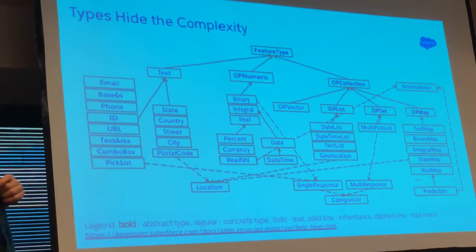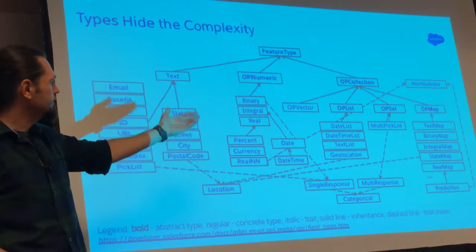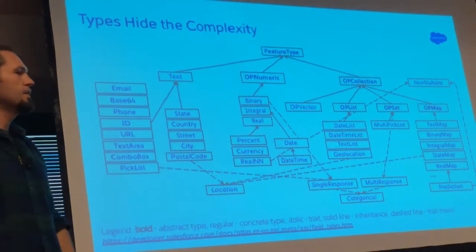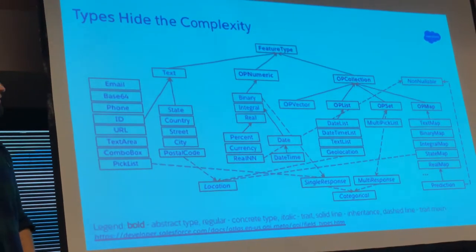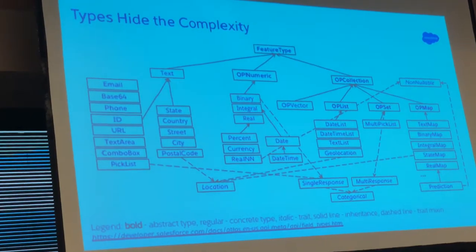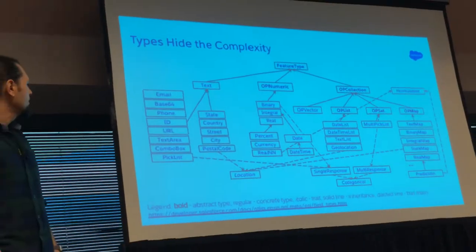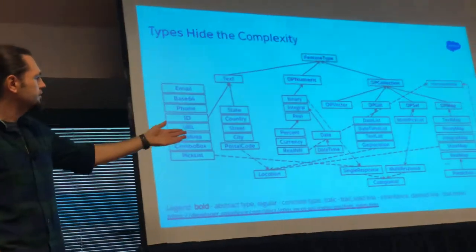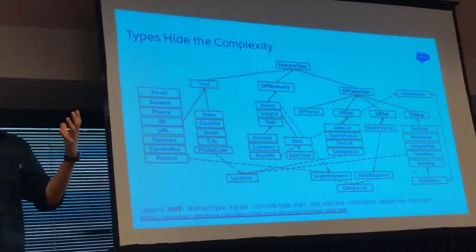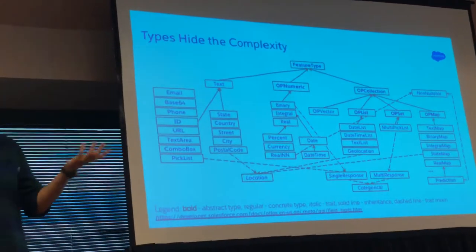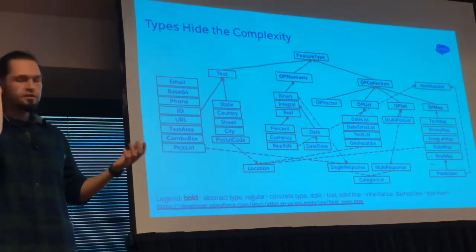Maybe the multi-response — any set variable is a multi-response, so you will have multi-class problems work with it. Or a location type is a state map — any map with state values is just a bunch of locations and should be treated as a location.